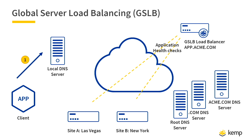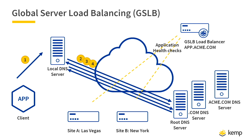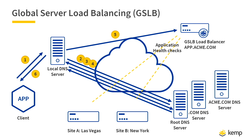The DNS process starts when the client makes a request to the local DNS server. The local DNS server itself — not the client — is going to make recursive queries to the root DNS, which tells it to go to the .com DNS, then to the acme.com DNS server. Finally, it knows to make the query to the GSLB device, which is the name server authority for app.acme.com, and the GSLB provides the response. That response goes from the local DNS server back to the client.